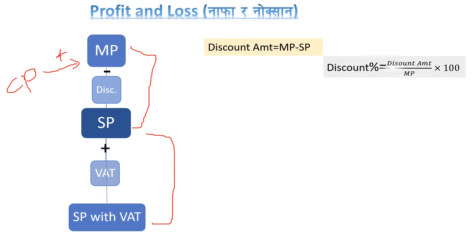The amount of discount is applied to the selling price via the mark price. If you have a percentage of discount, what is the amount of discount? The amount of discount is derived from the discount percentage. If you have a profit, how much cost price is involved? What do you have to do with discount mark price? If you have a selling price or cost price, then you use the selling price.